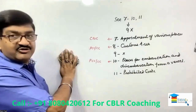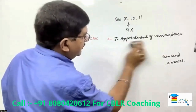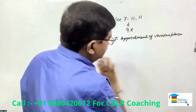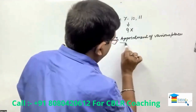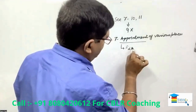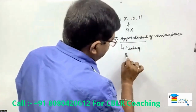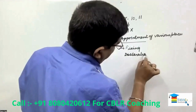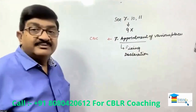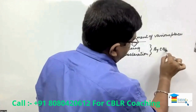First of all, let's take up section 7 — appointment of various places. What is the meaning of the word 'appointment' here? Appointment means fixing or declaration of certain places. And who makes the declaration? This is done by the board — CBIC.